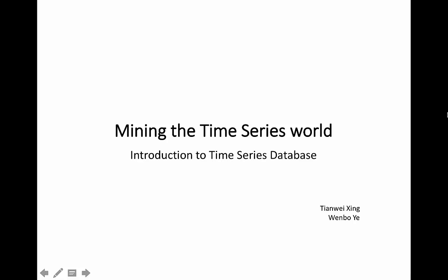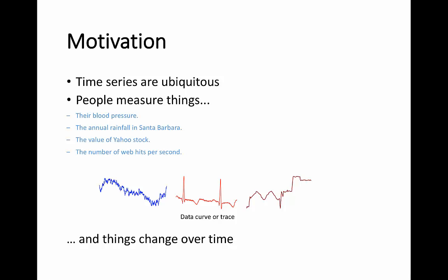Today we will give a brief introduction of our time series database. First is the motivation. Many time series are ubiquitous. We measure the features of the physical world and get the corresponding data points. Since everything changes over time, the data should have a time dimension, like blood pressure, rainfall value, stock price, etc. What we're interested in is not only the number, but also the curve or the traits of the data.